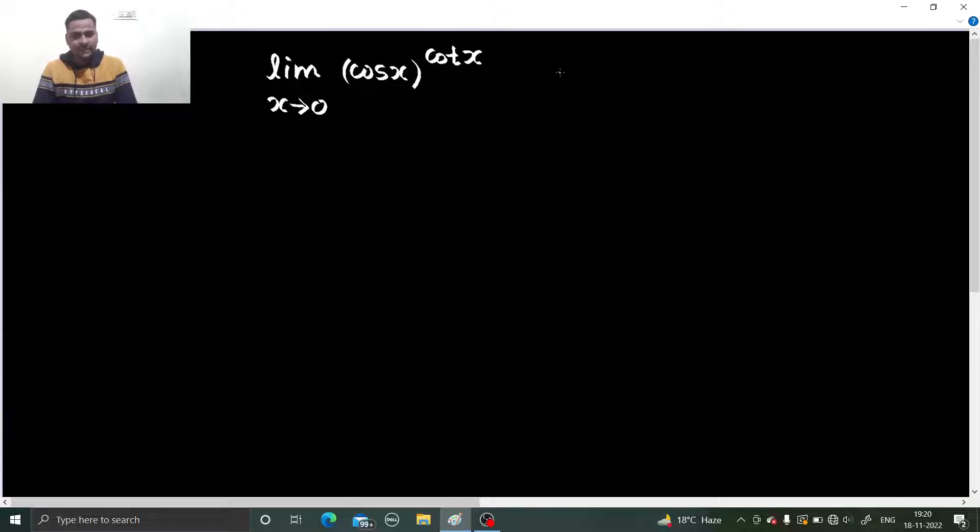So if you put x as 0, cos 0 is 1. And cot x, so when you put 0 here, cot is cos by sin, so cos 0 is 1 and sin 0 is 0, so 1 by 0, that will give you infinity. So obviously a 1 power infinity form exists here.